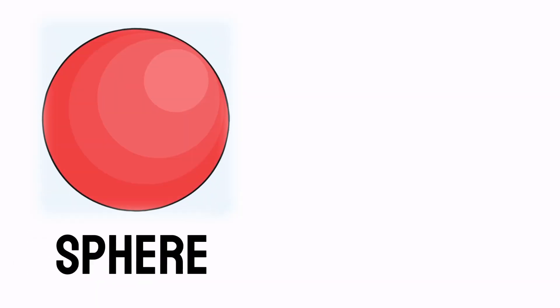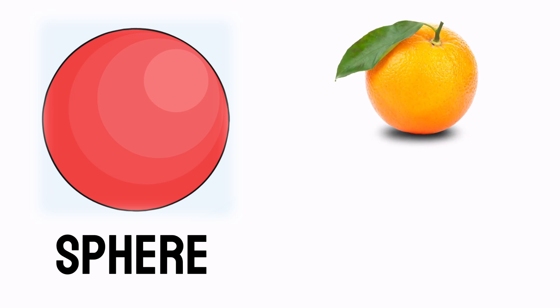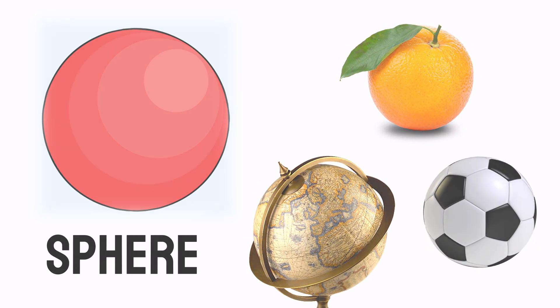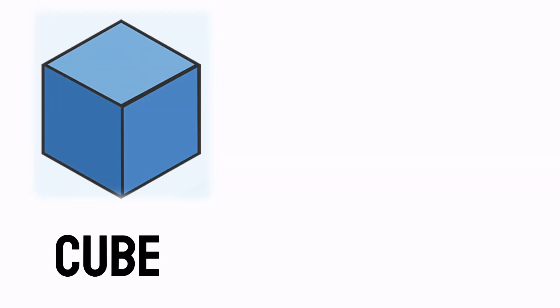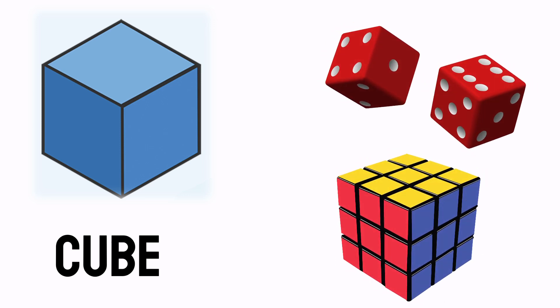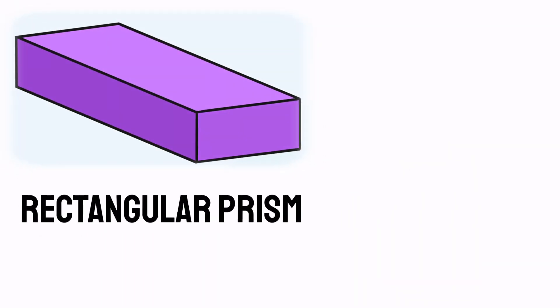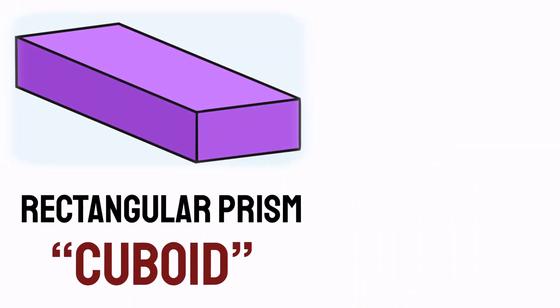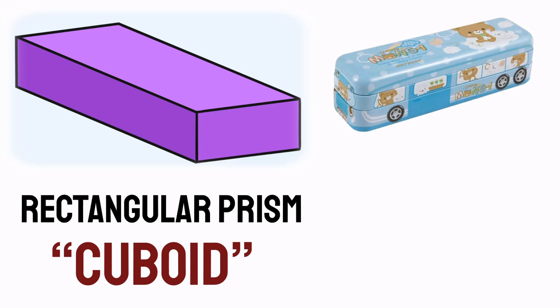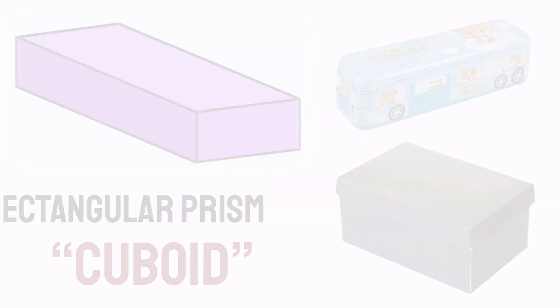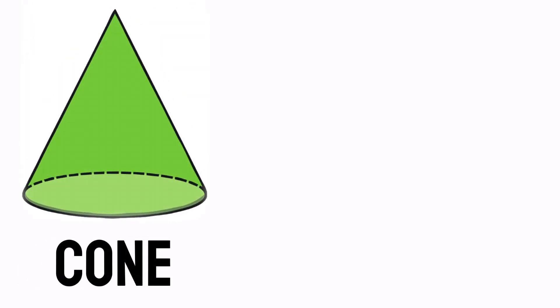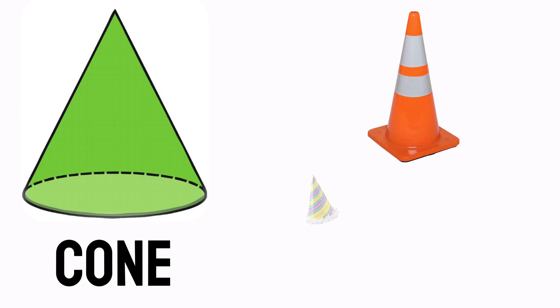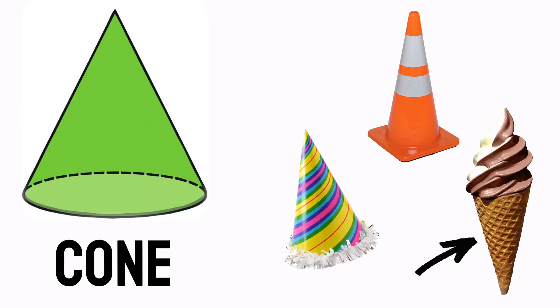The first one is a sphere. A sphere is a perfectly round shape just like an orange, a globe, and a ball. Next, we have a cube. A cube is a block whose sides are square and are all the same, just like dice and your Rubik's cube. We also have a rectangular prism, or sometimes we call it cuboid. It looks just like your pencil case and shoe boxes at home. Next, we have the cone. The cone looks like a traffic cone, a party hat, and an ice cream cone.